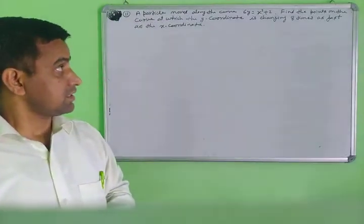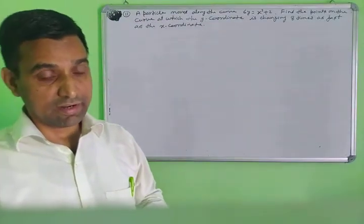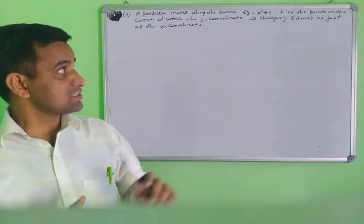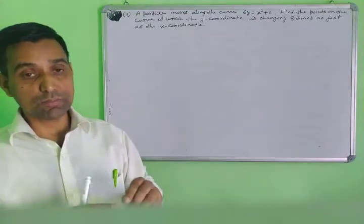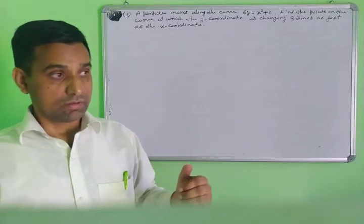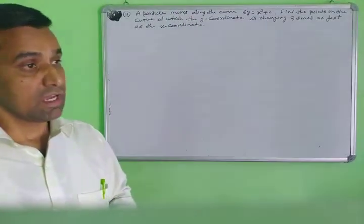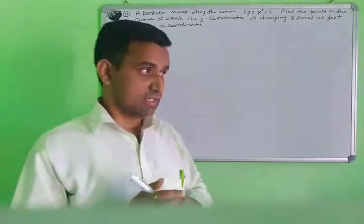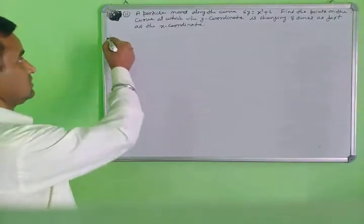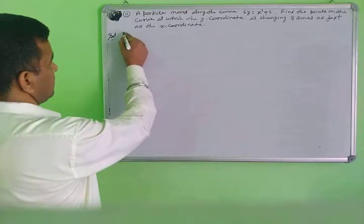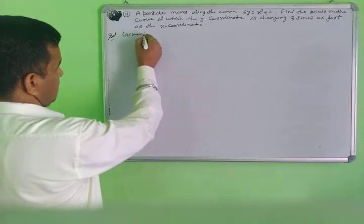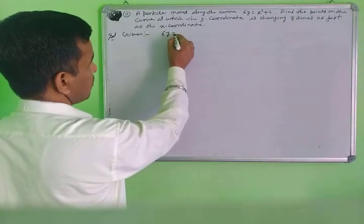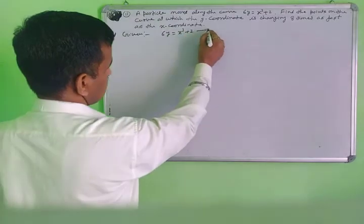First read the question carefully and understand it. The given conditions are: x and y coordinates are moving with respect to time. What is given here? The curve is 6y equals x cubed plus 2. The rate of change of x and y coordinates with respect to time t is what we are working with.